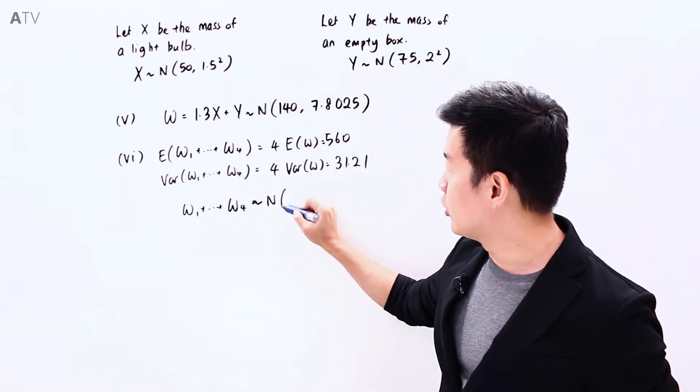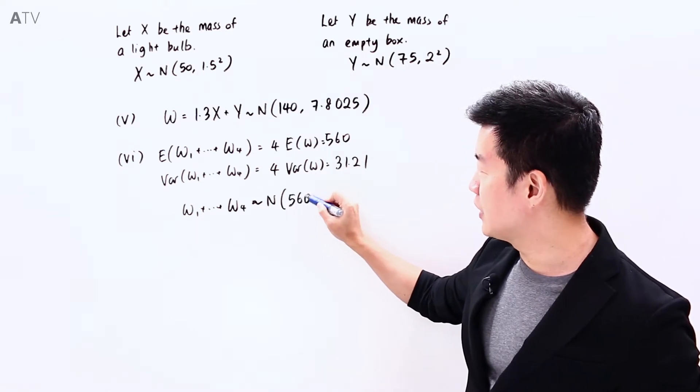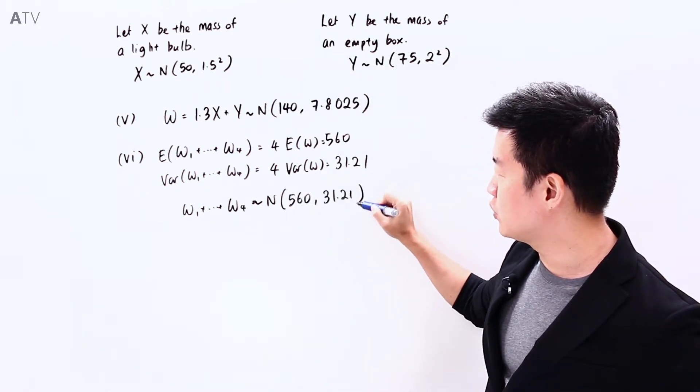will follow a normal distribution with a mean of 560 and a variance of 31.21.